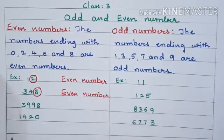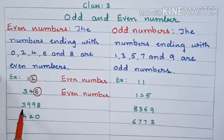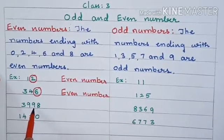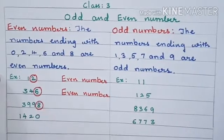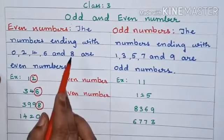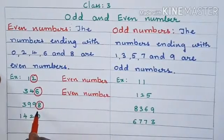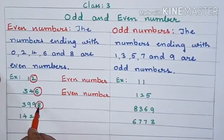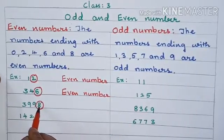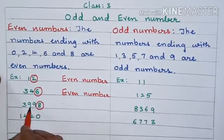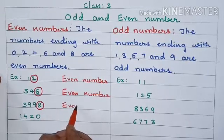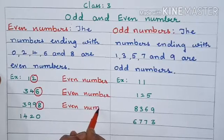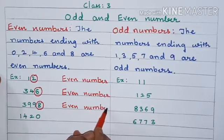Next one: 3,998. Children, see this last digit. What is this? 8. So 8 is also an even number. So 3,998 is also an even number.